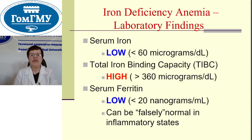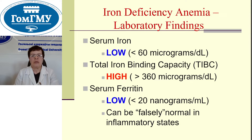Iron deficiency anemia laboratory findings: serum iron lower than 60 micrograms per deciliter, total iron binding capacity is high, and serum ferritin can be low — though it may be fairly normal in inflammatory states.